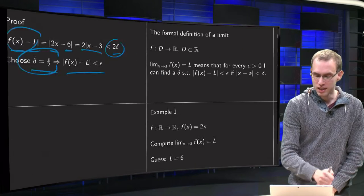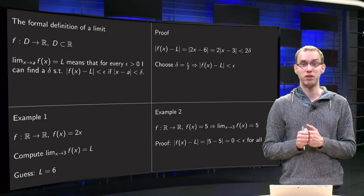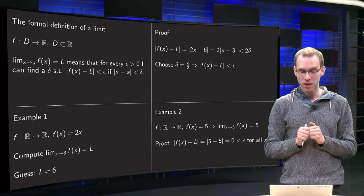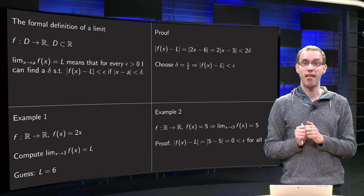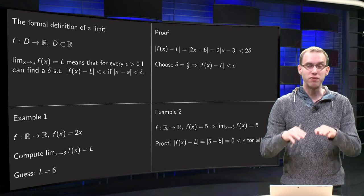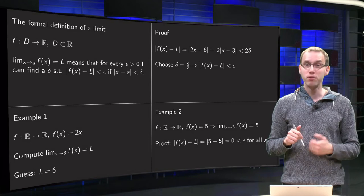Let's look at an easier example, not harder example. f from R to R, f(x) equals 5. So a function with this constant equal to 5. And what happens now if x approaches 3? Well, the limit, we obviously guess 5, because this function is 5 everywhere.